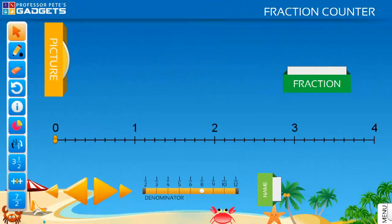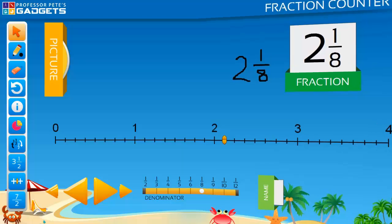Hide the pictures, name, and the fractions on the number line and move the marker. Ask your students to name the fraction at that point on the line. Reveal the fraction to self-correct answers.